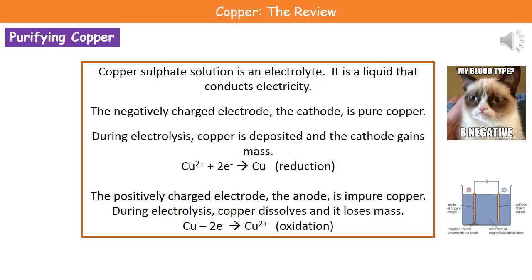The positively charged electrode, the anode, is impure copper — this is the one we start with. During electrolysis the copper dissolves and therefore the anode loses mass, and we see an oxidation reaction occurring. We start with copper atoms, they lose two electrons to make copper two-plus ions. Those copper two-plus ions travel from the anode over to the cathode because the positive ions are attracted to the negative electrode, and that's where they're deposited as they pick up two electrons to make copper atoms.